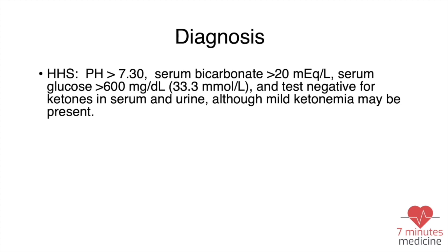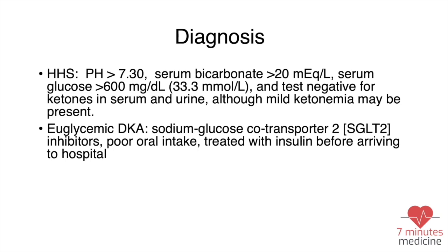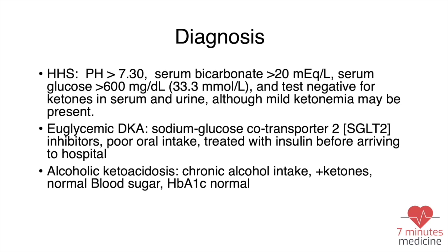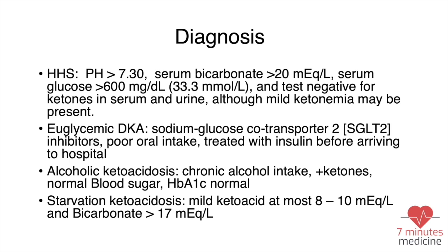For diagnosis: in HHS, pH is generally above 7.3, serum bicarbonate above 20, and serum glucose above 600 mg/dL, with possible but mild ketonemia. In euglycemic DKA — increasingly seen with SGLT2 inhibitors — glucose can be normal or even low, so diagnosis relies on pH, ketones, and anion gap. For alcoholic ketoacidosis: chronic alcohol intake, positive ketones, normal blood sugar, and normal hemoglobin A1c. Starvation ketoacidosis presents with mild ketoacidosis at most, bicarbonate above 17.